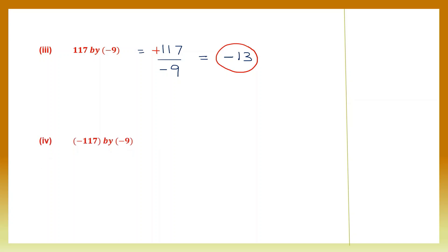Next: minus 117 divided by minus 9. Here both signs are minus. Minus into minus is plus — we can even cancel the signs. It's understood the answer is positive. 117 divided by 9 we already know is 13, so our answer to this question is plus 13.